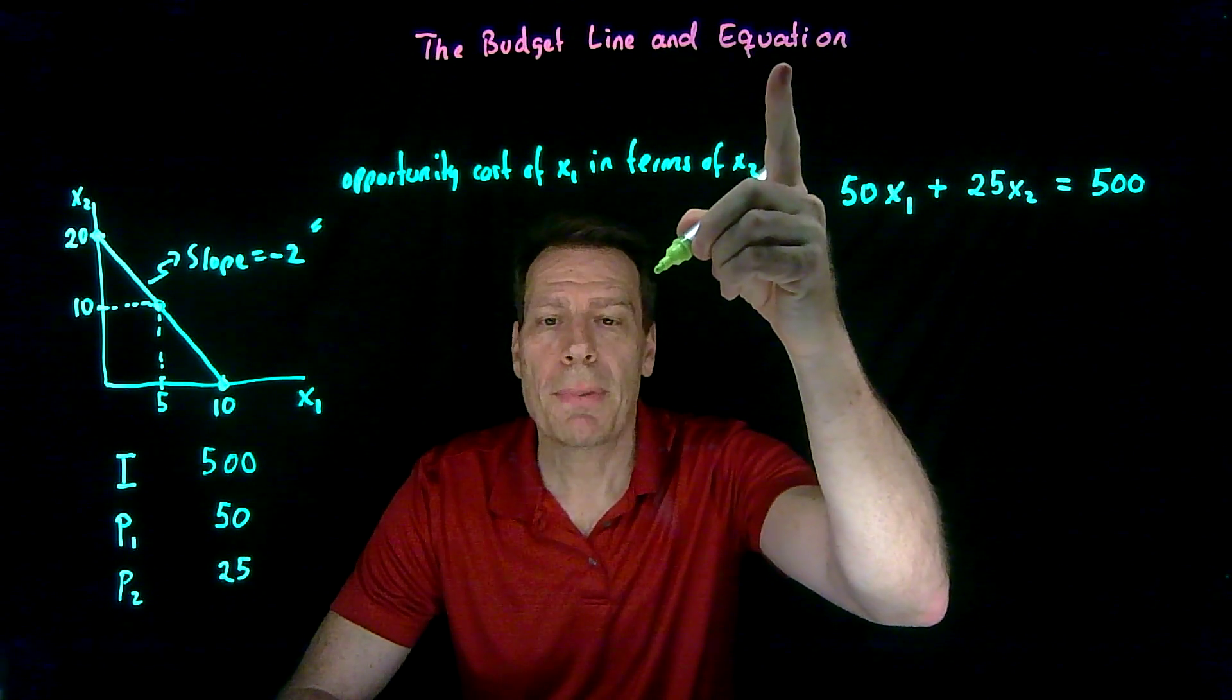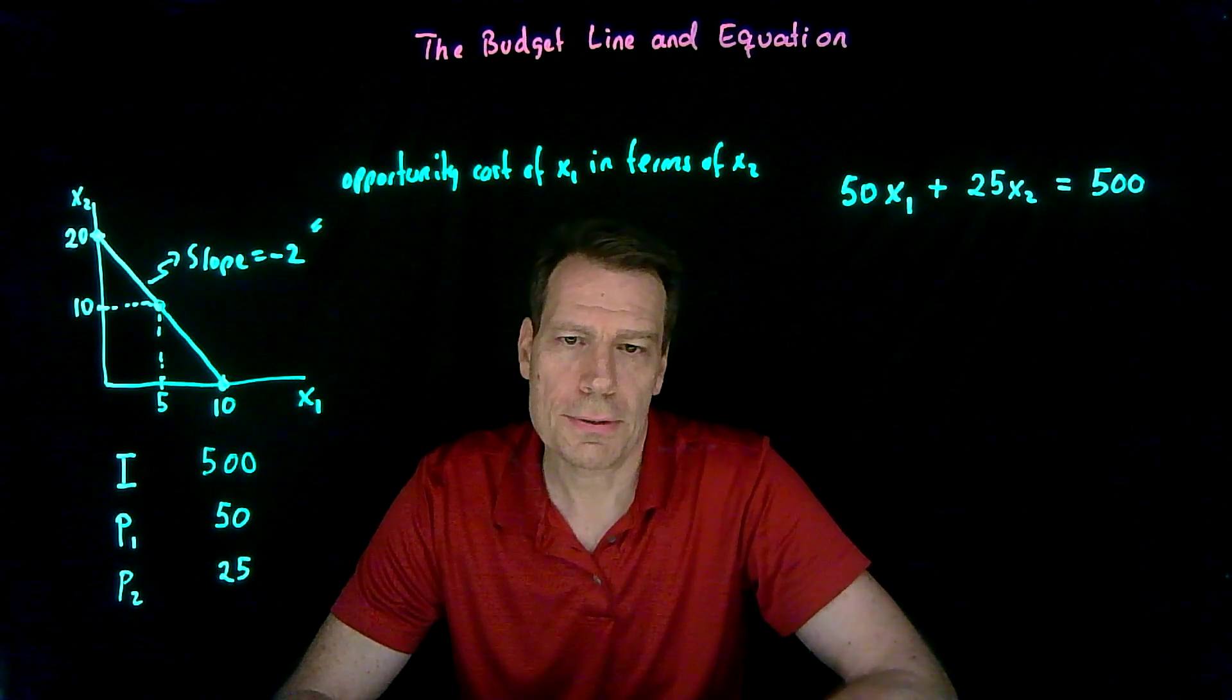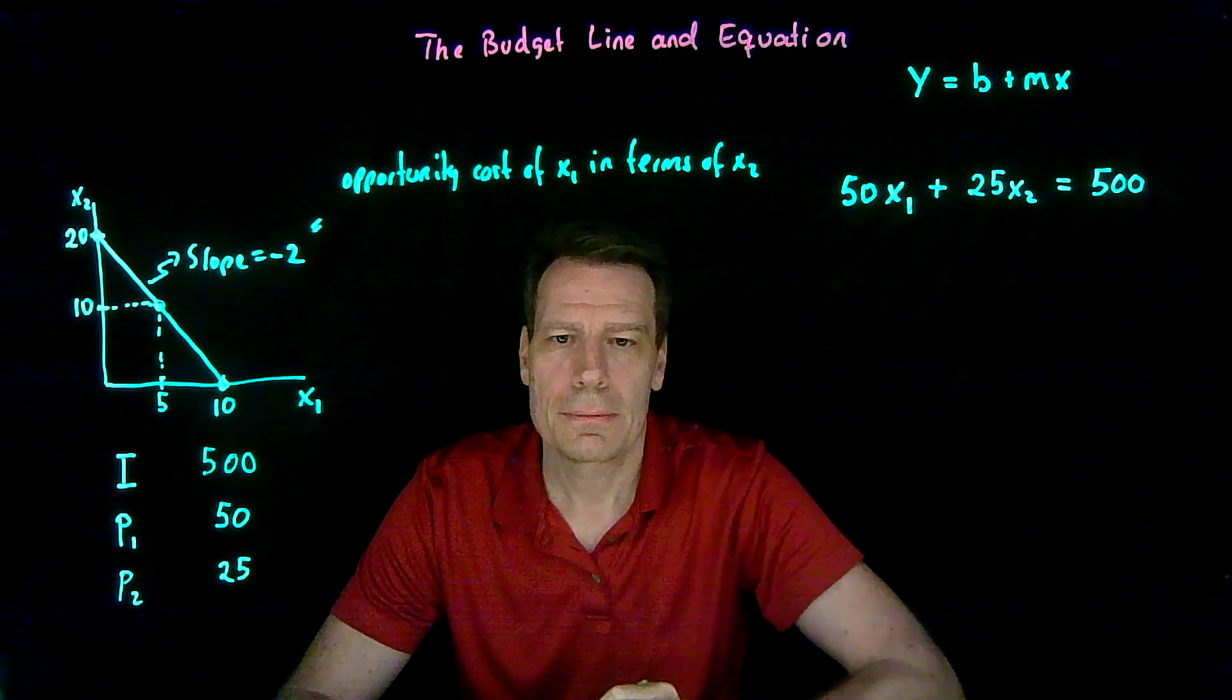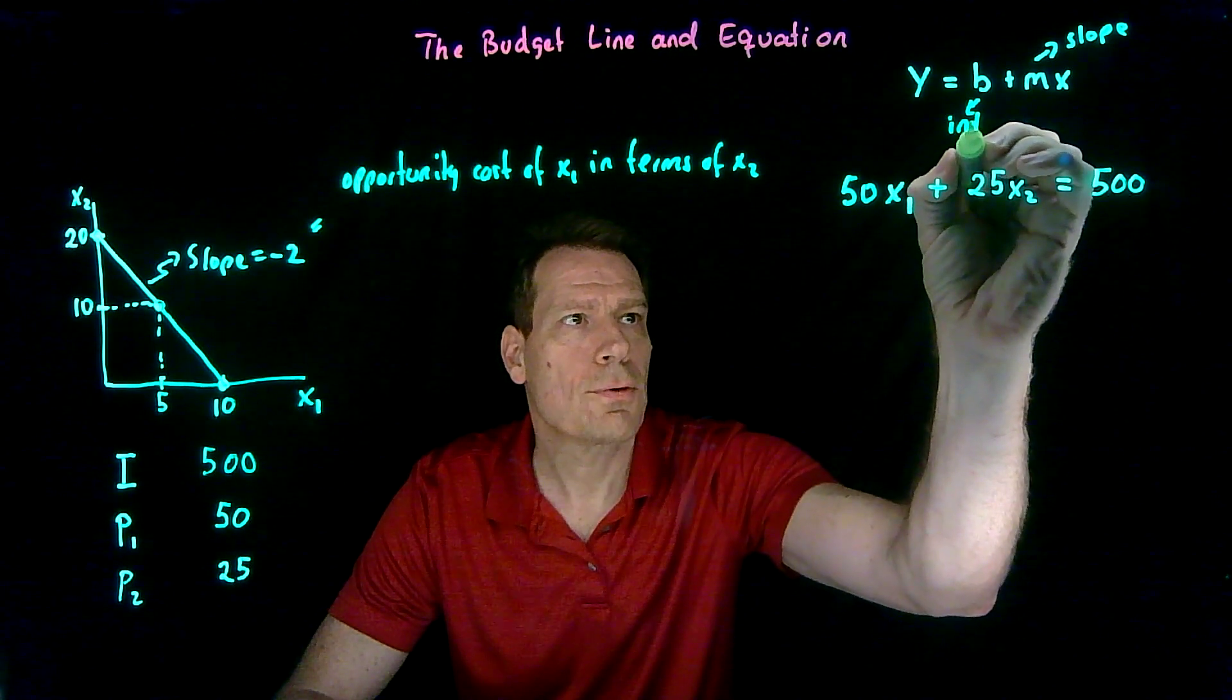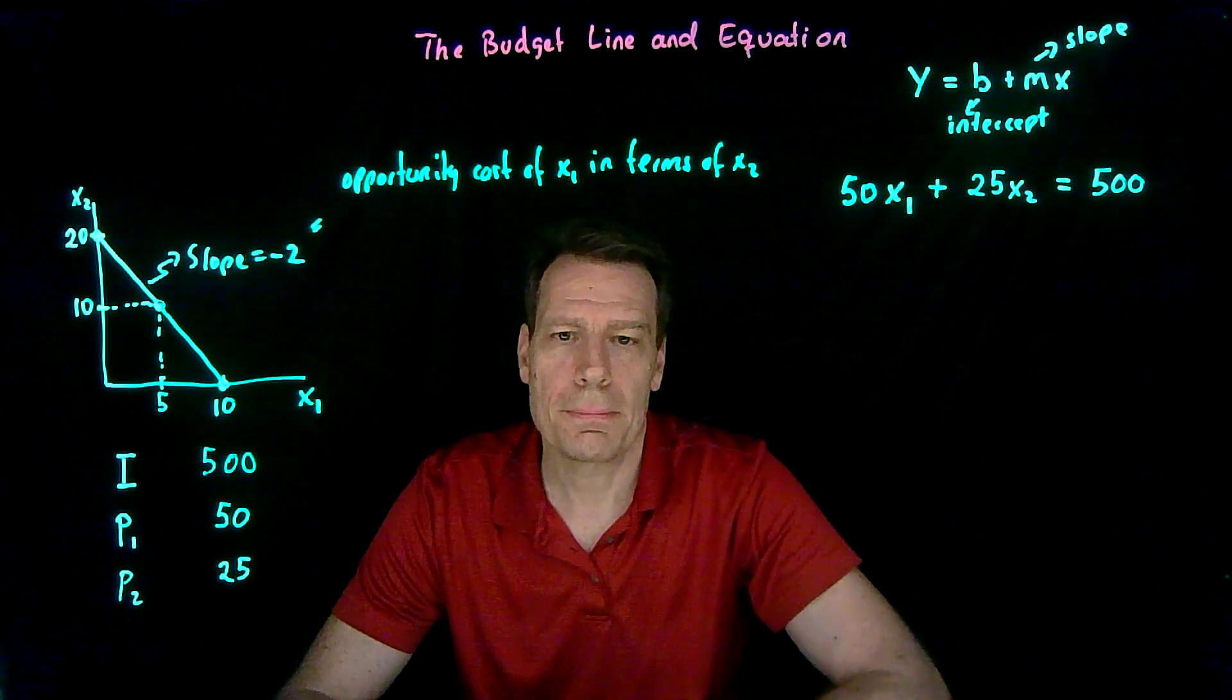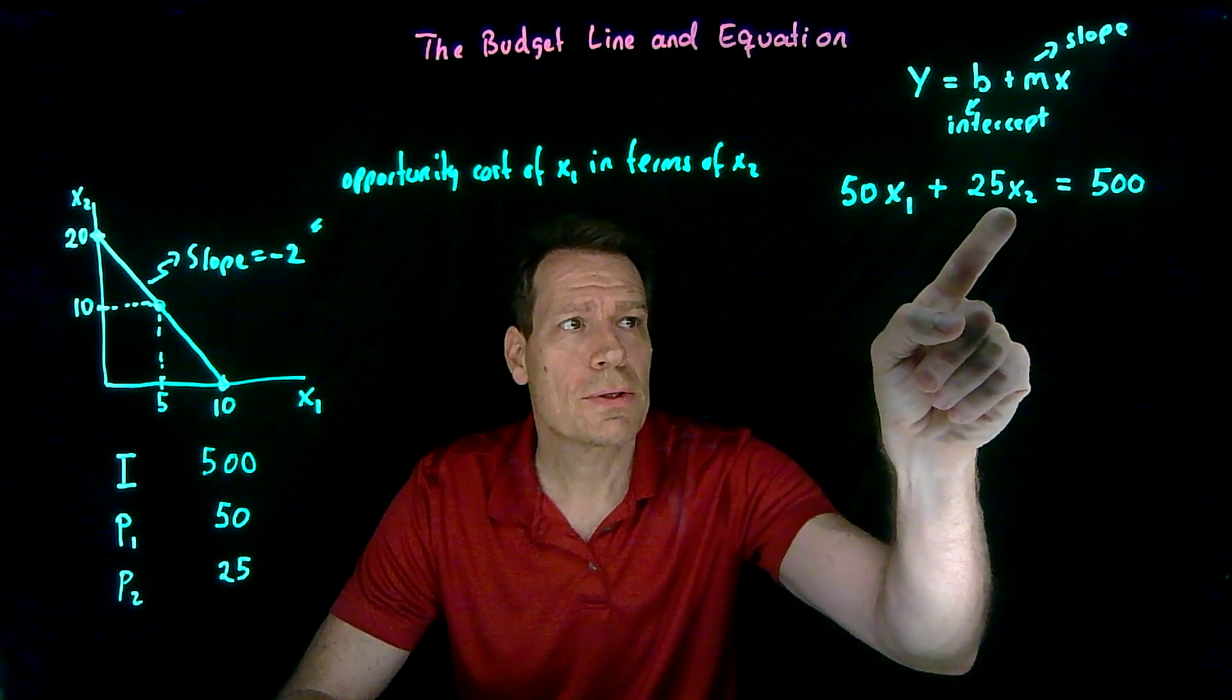So now we have an equation. We have a budget equation. But it's hard for us to interpret this equation and to see how it graphs unless we get it into the form that we're used to seeing for linear equations. So if you go back to your algebra you'll remember that the equation of a line is something like y is equal to b plus mx, where m is the slope and b is the intercept, the vertical intercept. That's how we can easily map from an equation of a line to what the line looks like in a graph. So we'd want to get this equation into this form and our y in this equation is x2. x2 is on the vertical axis. x1 is on the horizontal axis so it's like the x here. So to get this equation into this form we want just x2 on one side.